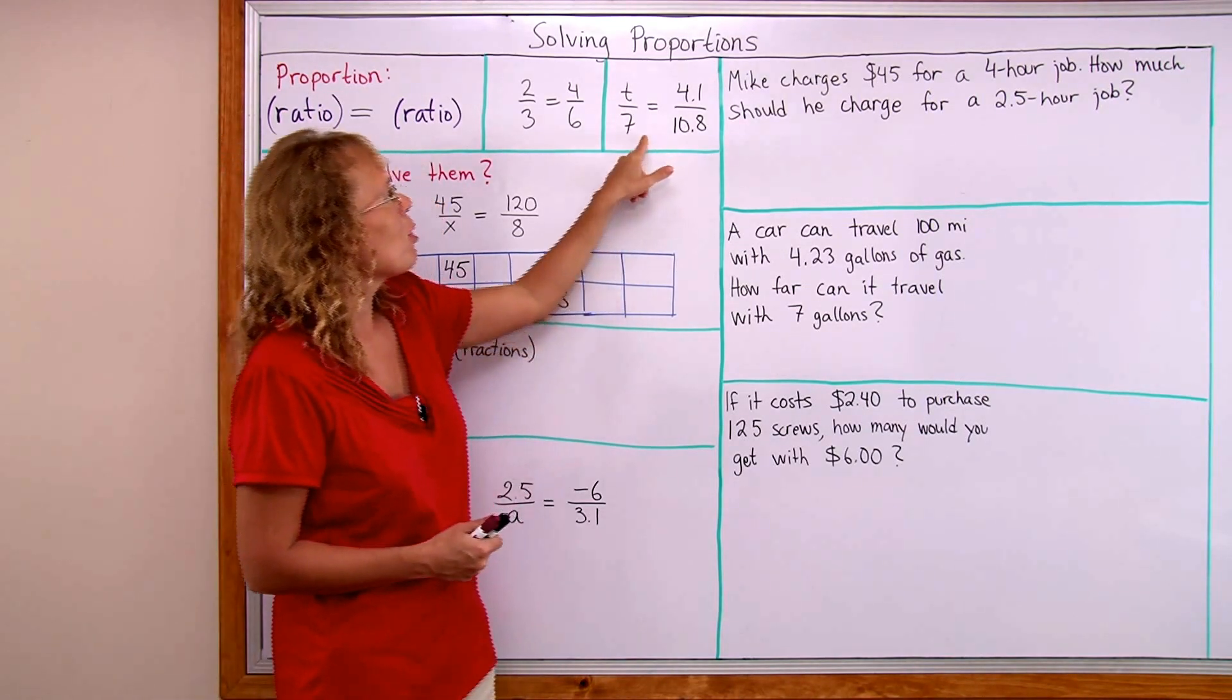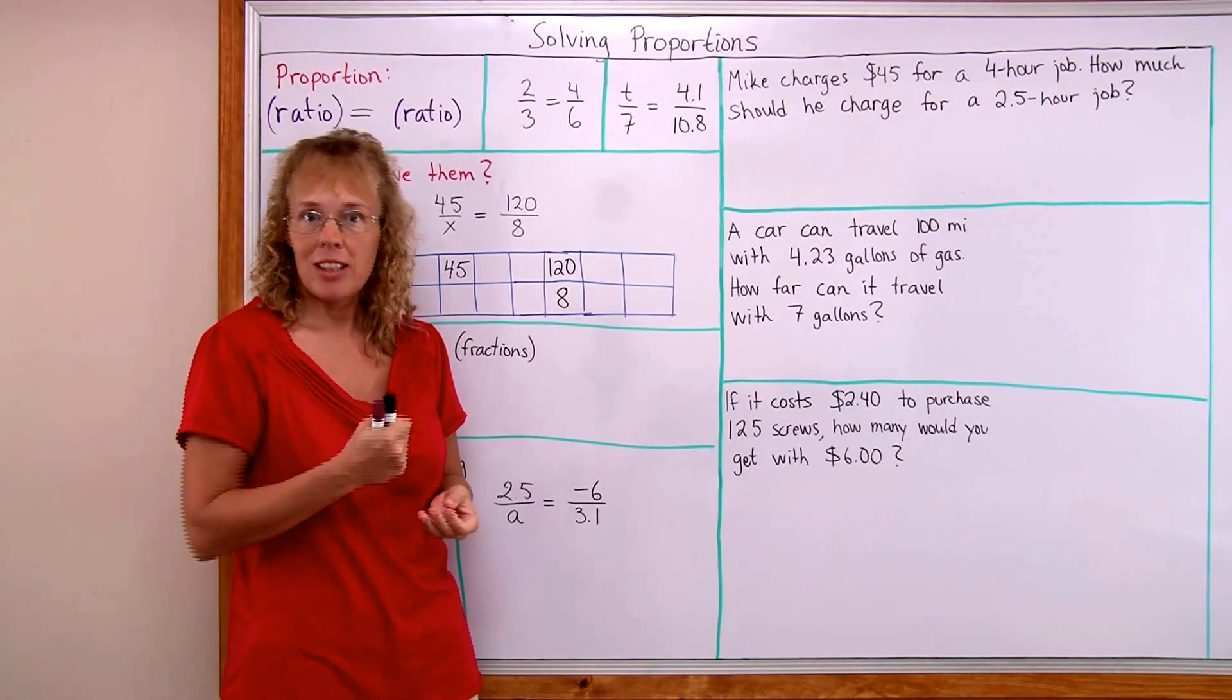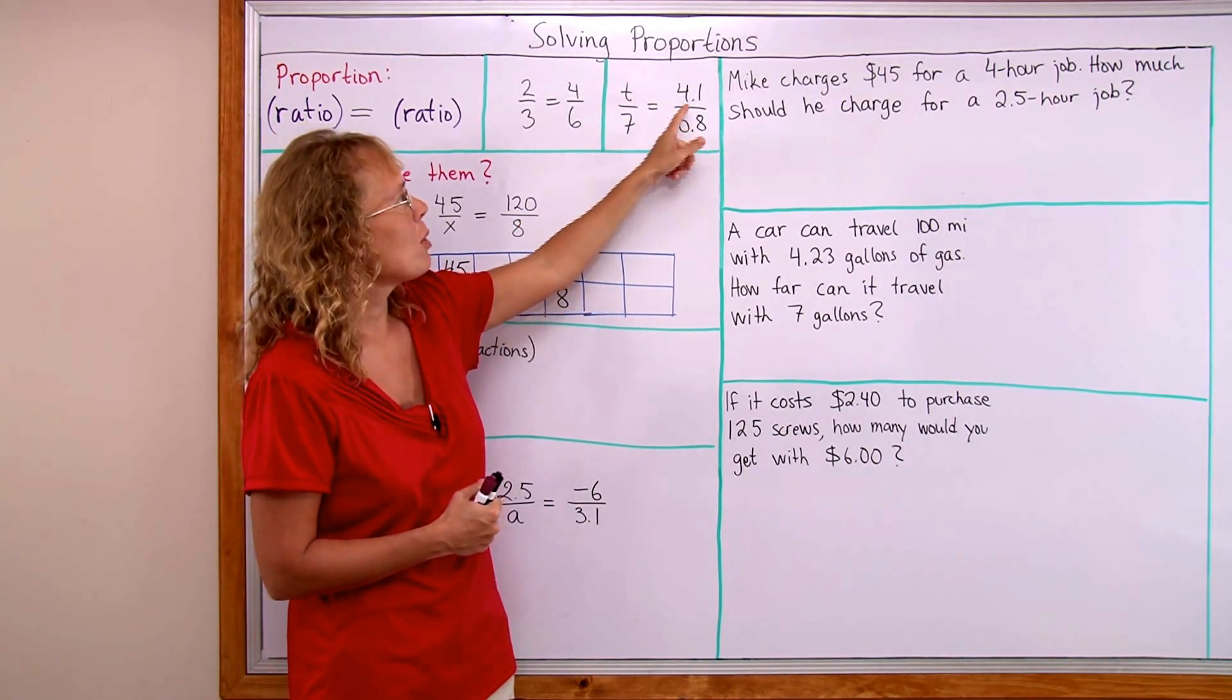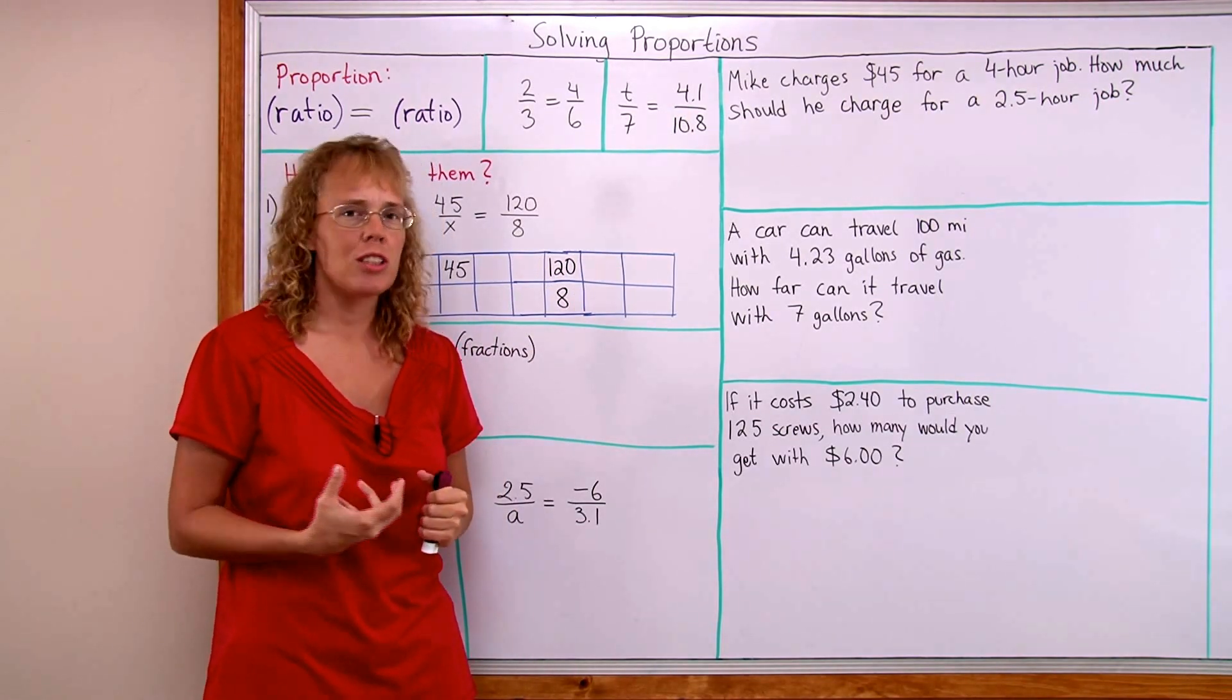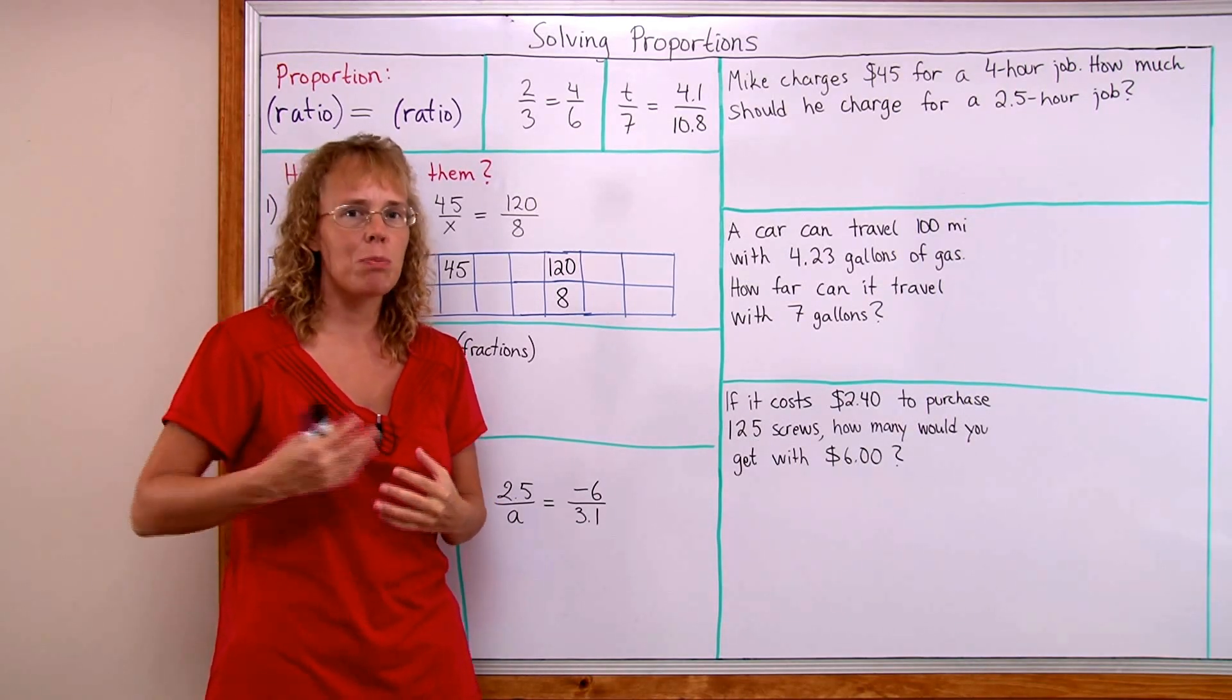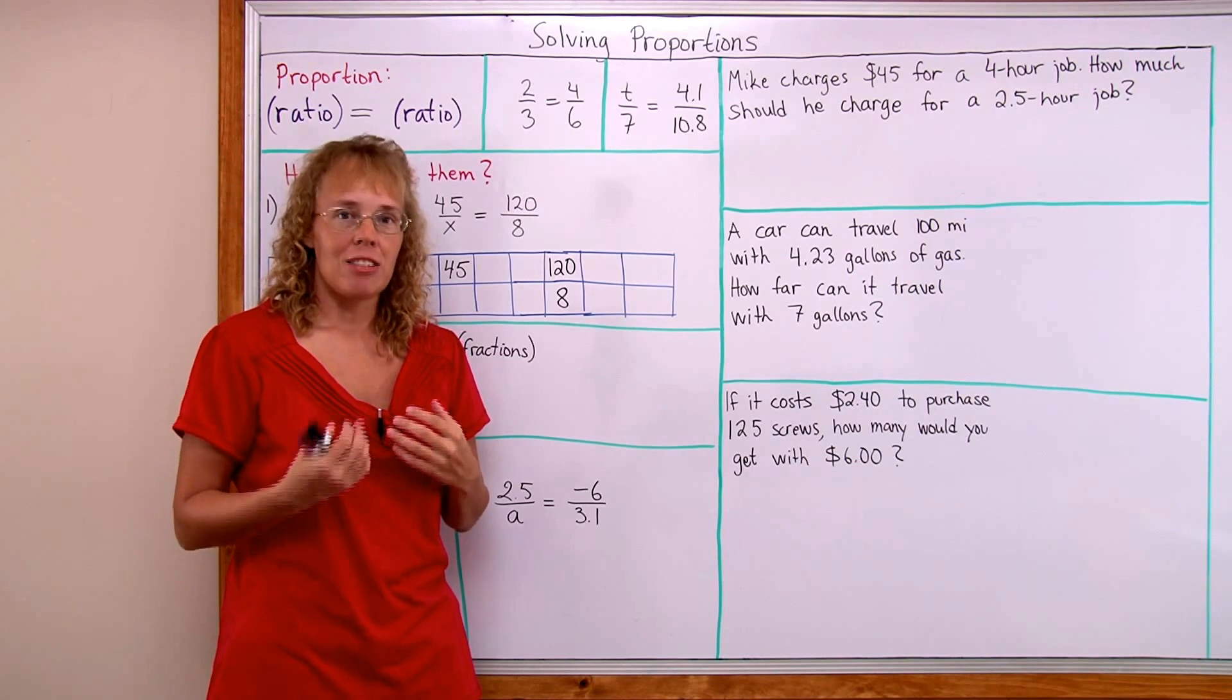Here's another proportion. T over 7 equals 4.1 over 10.8. It is a proportion because you can think of those as ratios. The ratio of T to 7 is the same as the ratio of 4.1 to 10.8 and we encounter proportions lots many times in real-life situations such as prices per pound or speed or gas mileage.